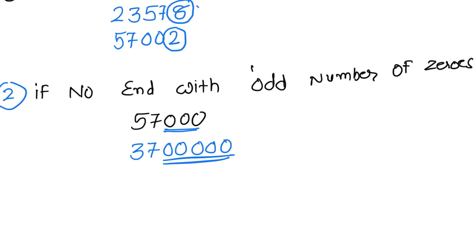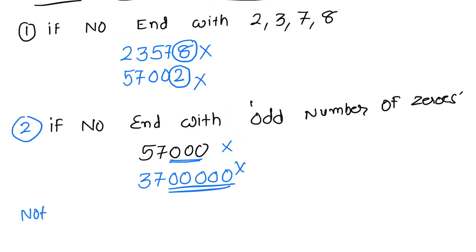So all four numbers are not perfect square numbers. Keep in mind that this rule is for only finding non-perfect square numbers. So if any number is not following this rule, doesn't mean that it's a perfect square. We cannot do that.